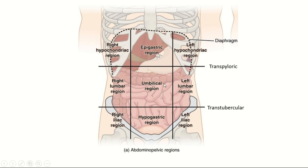Between the lumbar regions we have the umbilical region, which contains the umbilicus. At the bottom on the right side we have the right iliac region, on the left side the left iliac region, and in between we have the hypogastric region. So above the umbilical region is the epigastric region, and below the umbilical region is the hypogastric region.